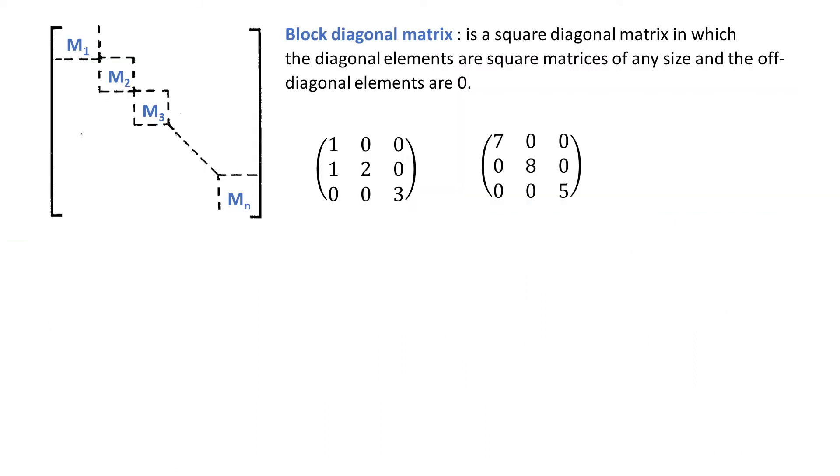In case you cannot quite remember, block diagonal matrix is a square diagonal matrix in which the diagonal elements are square matrices of any size and the off diagonal elements are zeros.